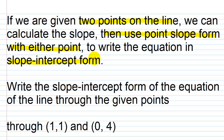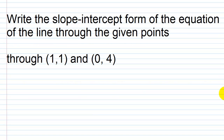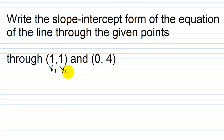Let's look at an example. We want to write the slope-intercept form of the equation of the line through the given points: 1 comma 1 and 0 comma 4. When calculating slope, it doesn't matter which one we denote as x₁, y₁ or x₂, y₂ — we just have to be consistent. So let's make this x₁, y₁ and this x₂, y₂.